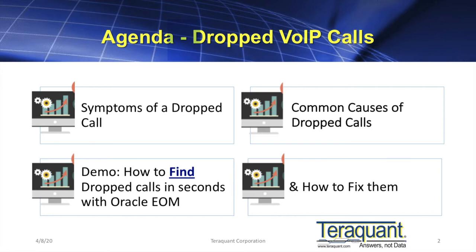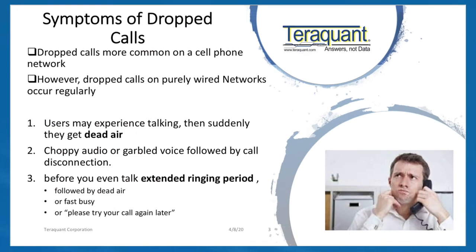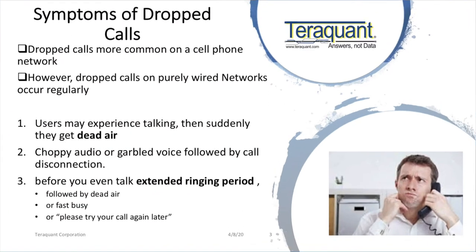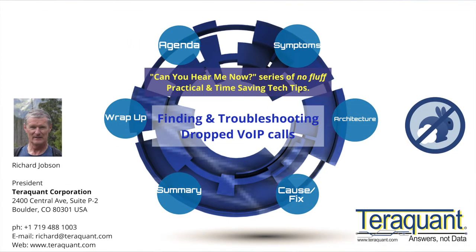So what are the symptoms of a dropped call? Drop calls do occur on cell phone networks, but they also occur quite regularly on wired voice-over-IP networks. They might be preceded with choppy or garbled audio, or you might just get dead air — suddenly finding yourself talking to yourself: 'Hello, are you still there?' Sometimes the call does not initially connect; you get a fast busy or 'please try your call again later.' That's a failed call, which we'll deal with in the next video.